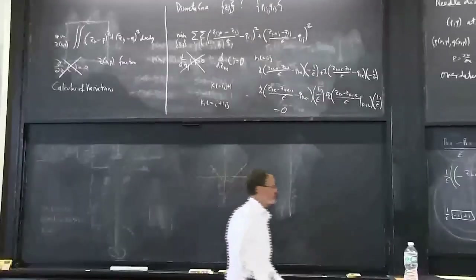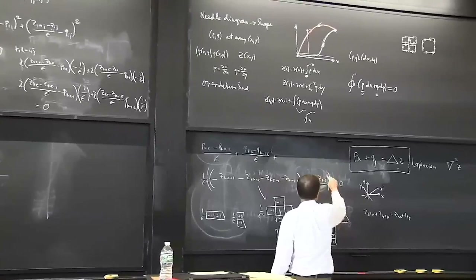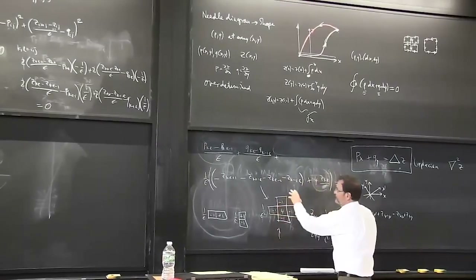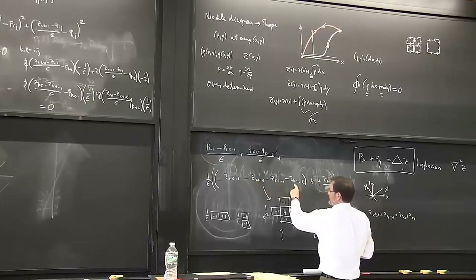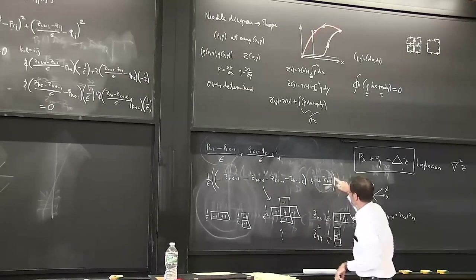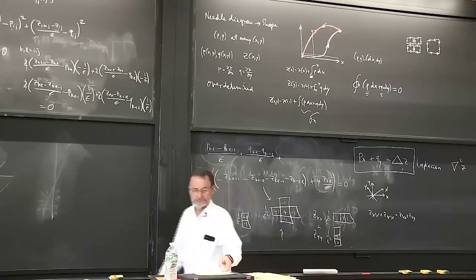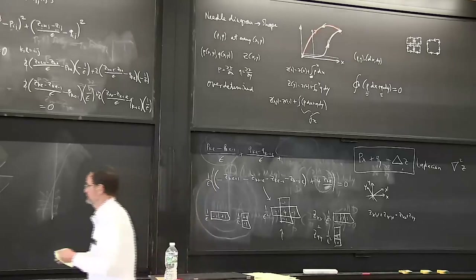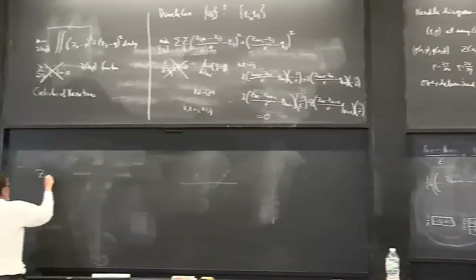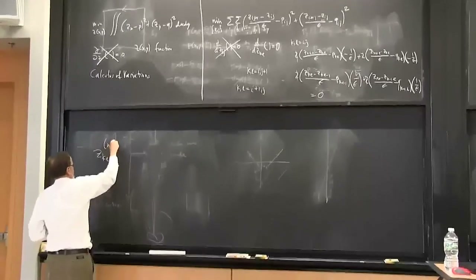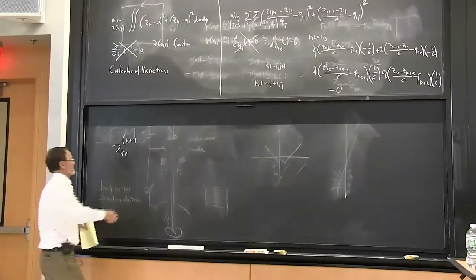We can pull out one of the terms and pretend that we have an initial guess - we know what these values are at the moment and we're going to compute a new value for this one. We use a subscript in parentheses as a way of indicating the iteration step - step n+1 is computed from step n values.